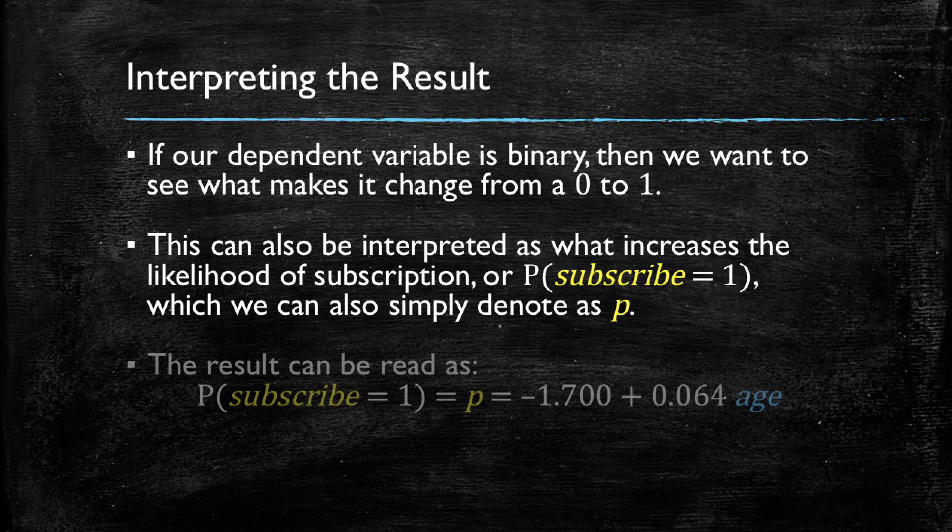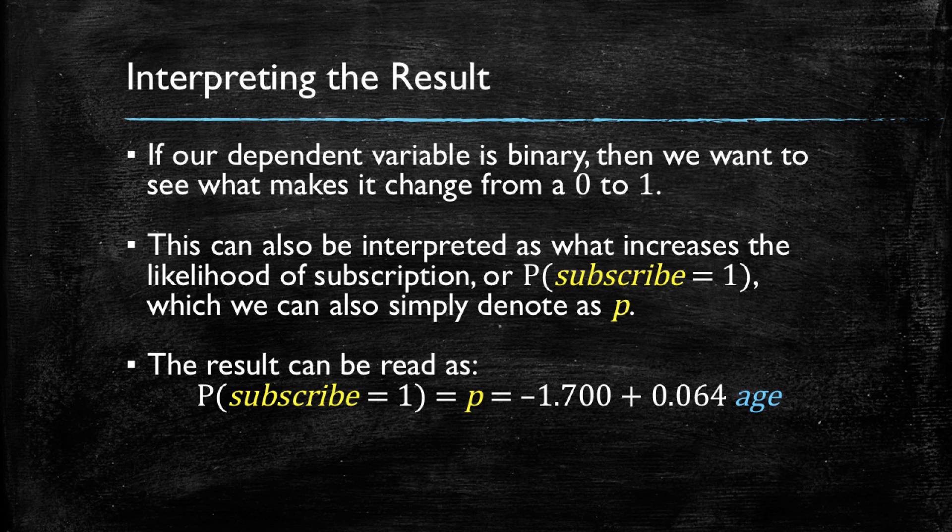Let's denote for simplicity this probability as p, and then we can rewrite the model as the probability of subscribing equal 1, or p, is minus 1.7 plus 0.064 times age.